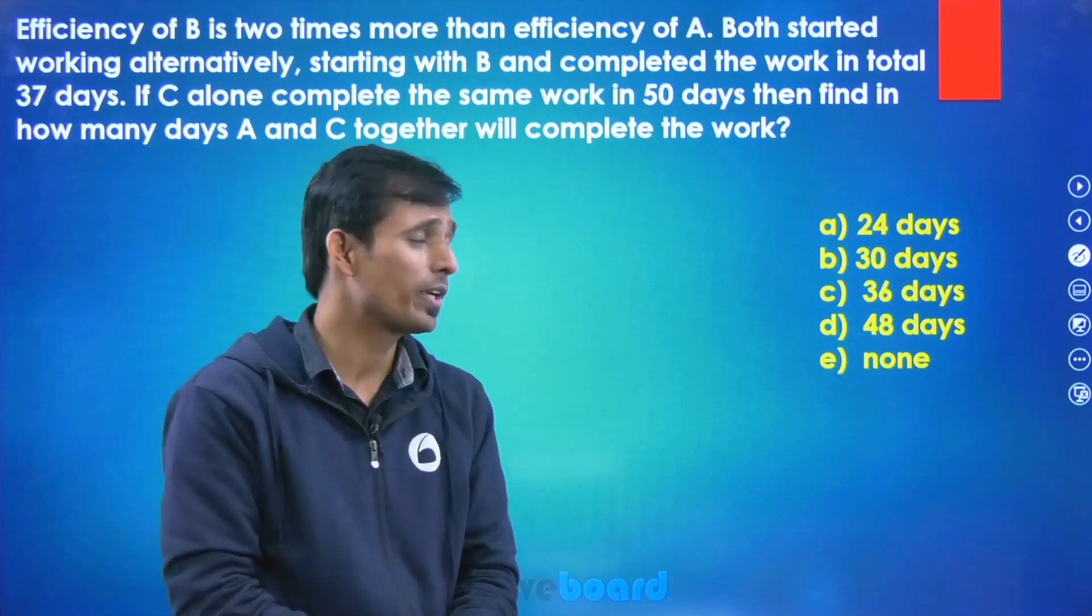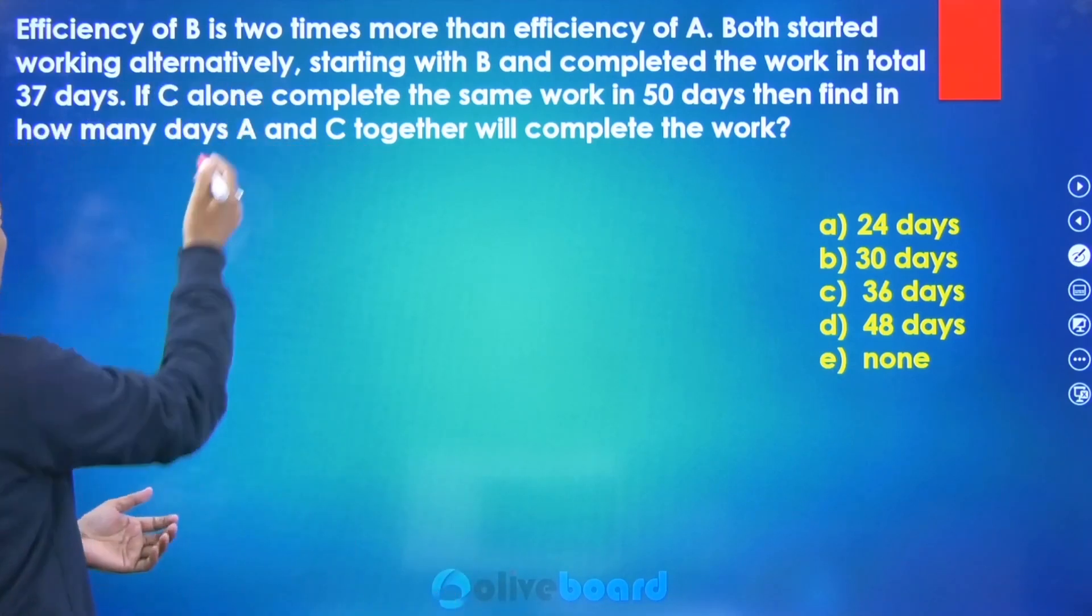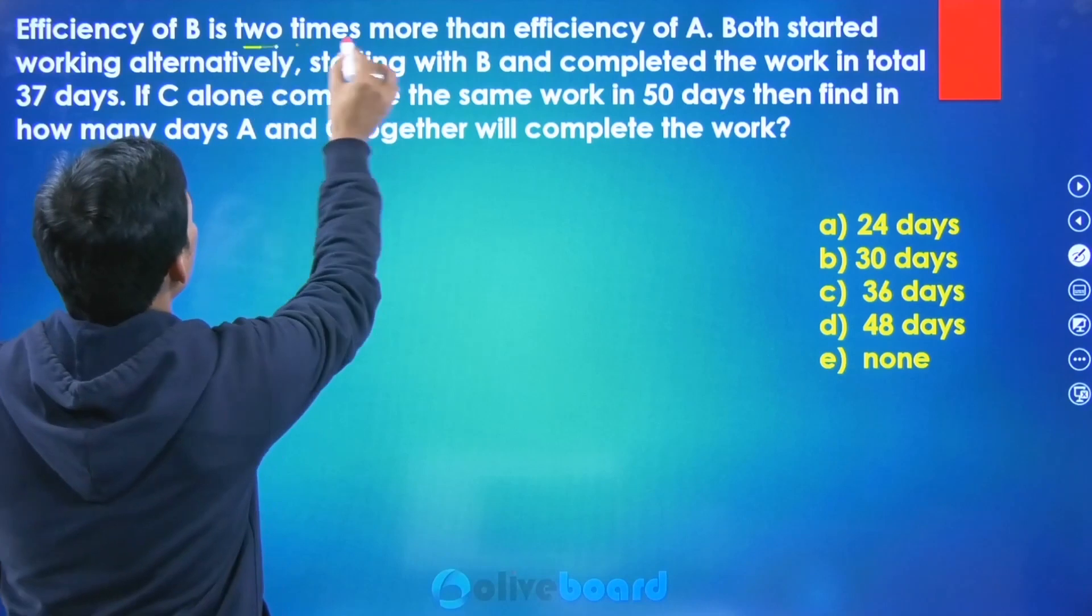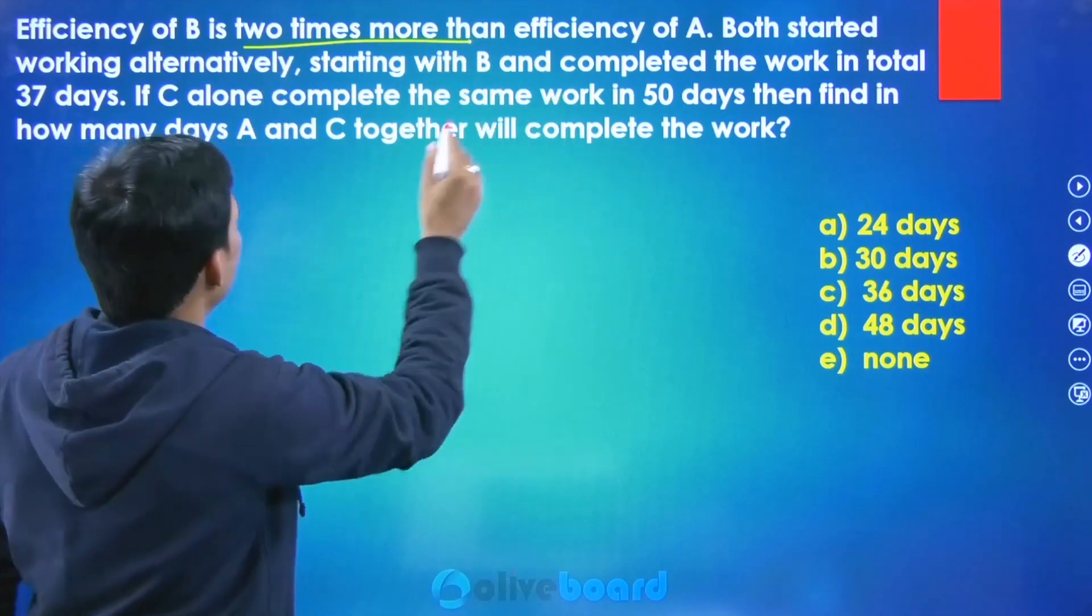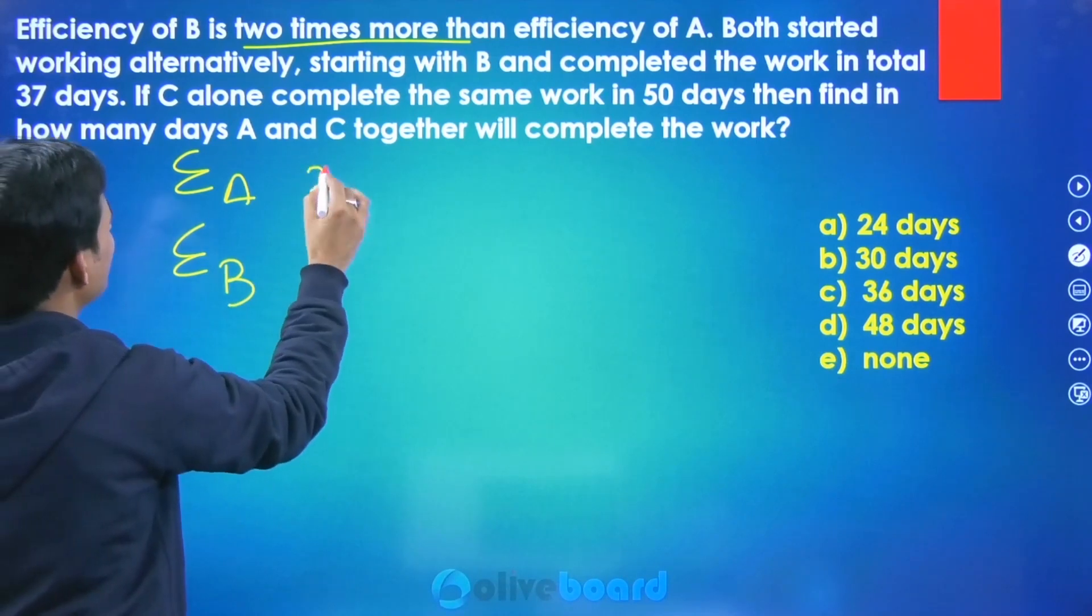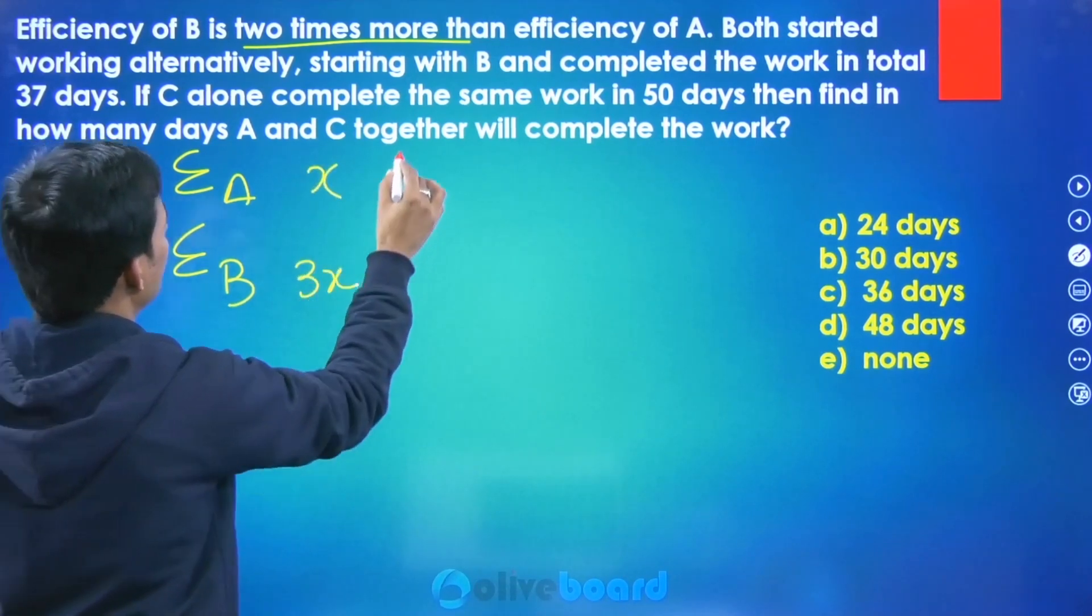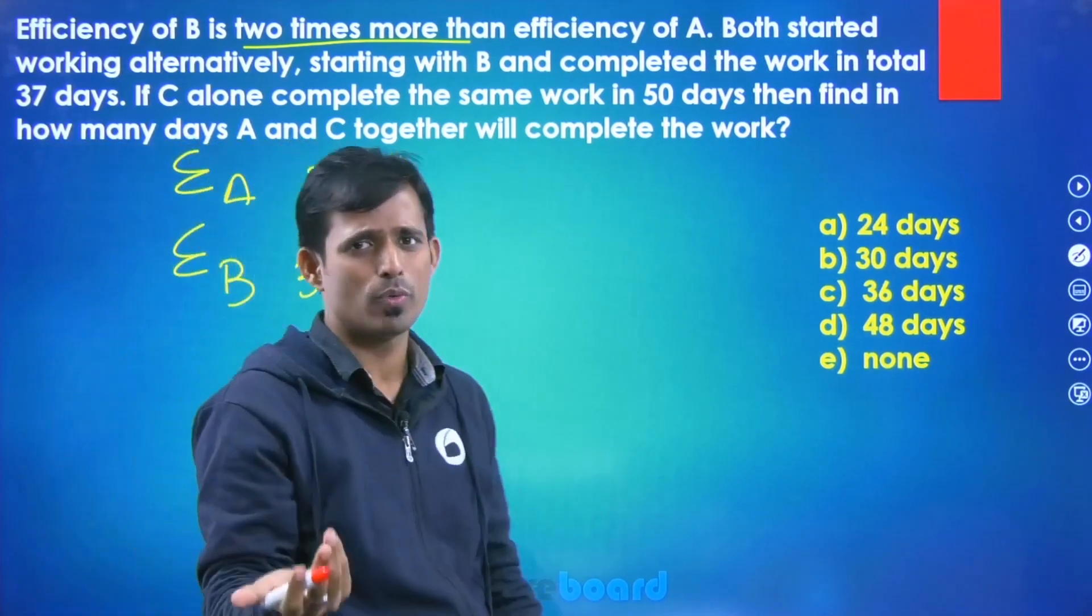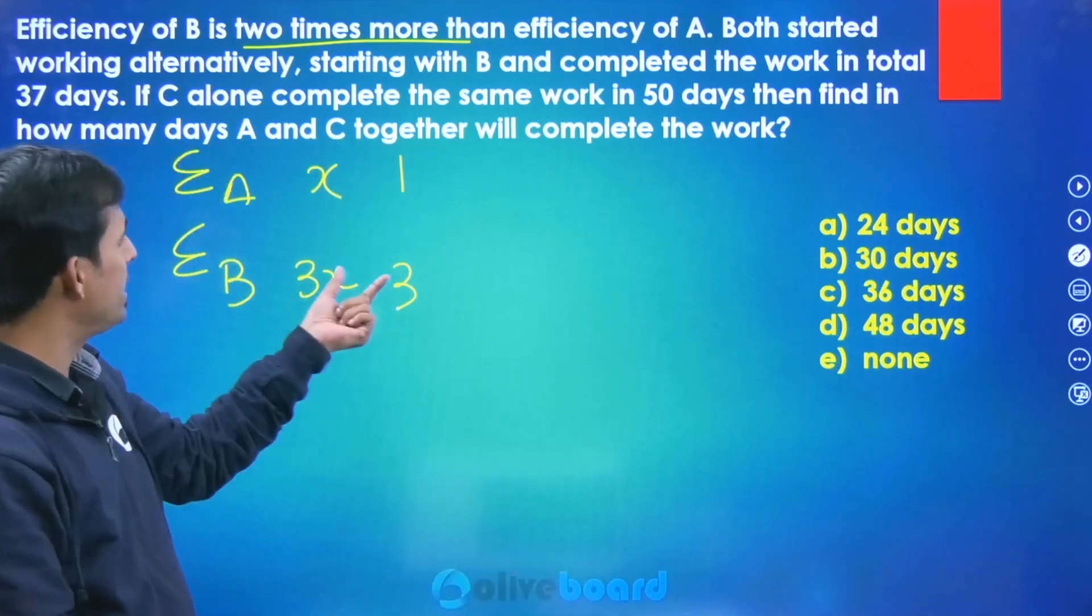Okay, so question is like efficiency of B is two times more, not two times, two times more than A. So efficiency of A, efficiency of B, you can take x or you can take 3x, otherwise 1 and 3. You can take ratio 1 is to 3. So efficiency of B is 3 in your course.